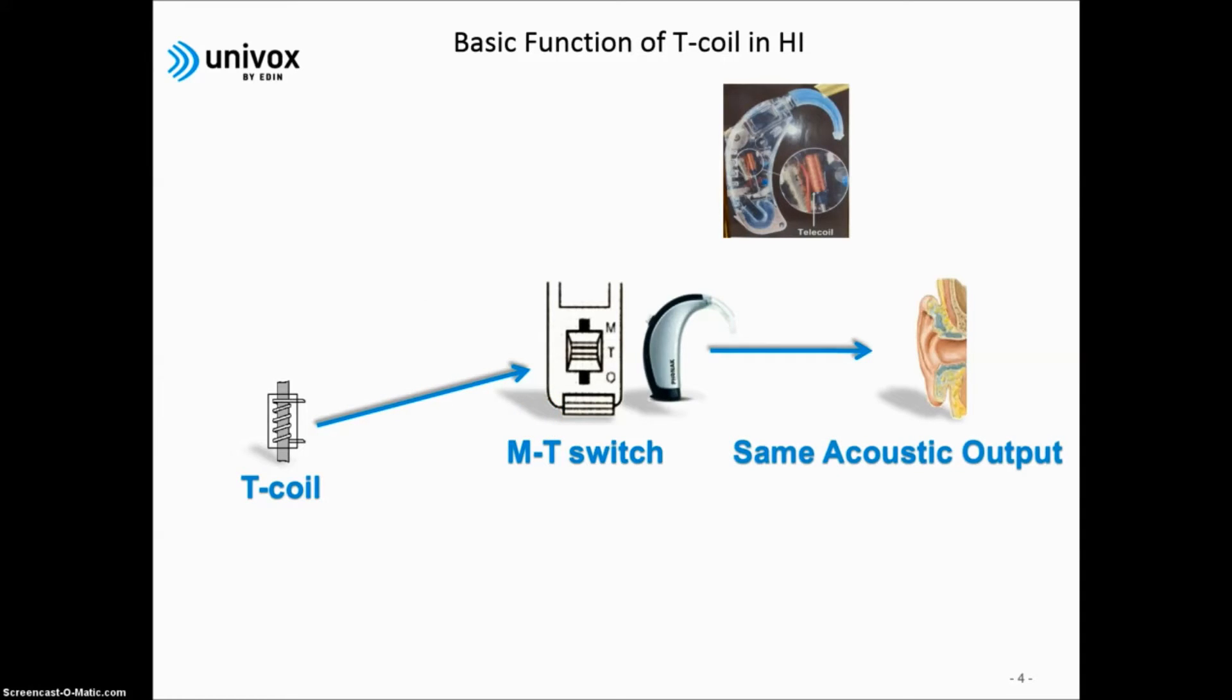By changing the input signal from microphone to T-coil, the transmitted signal from the hearing loop is picked up by the built-in T-coil and gives the same acoustic output level to the user.